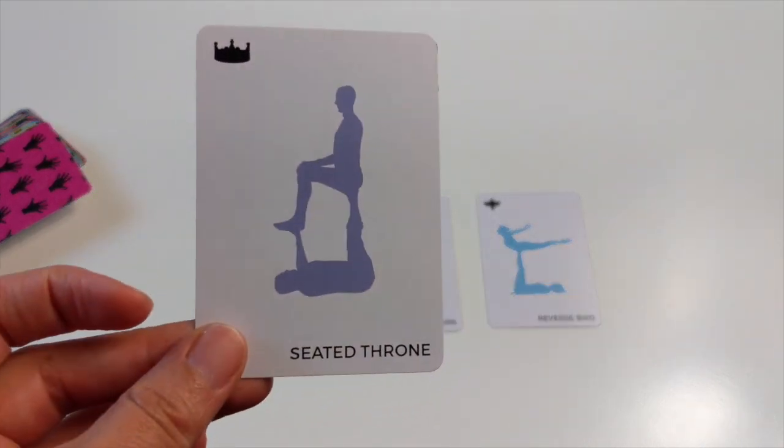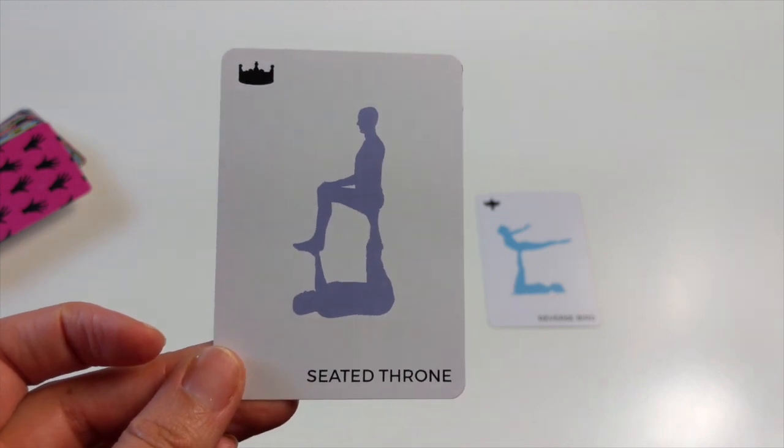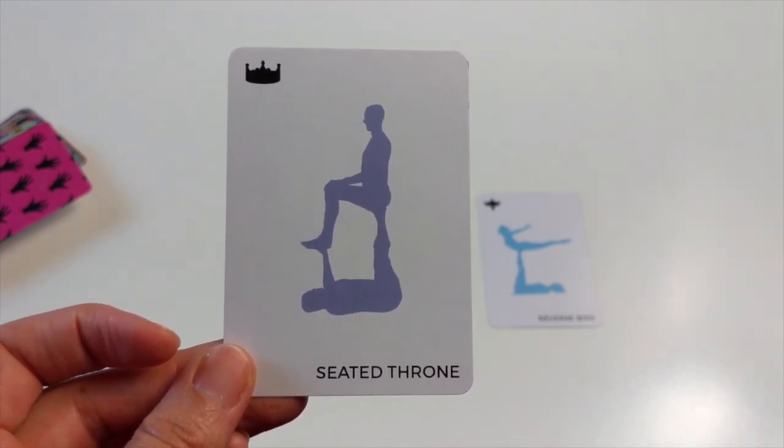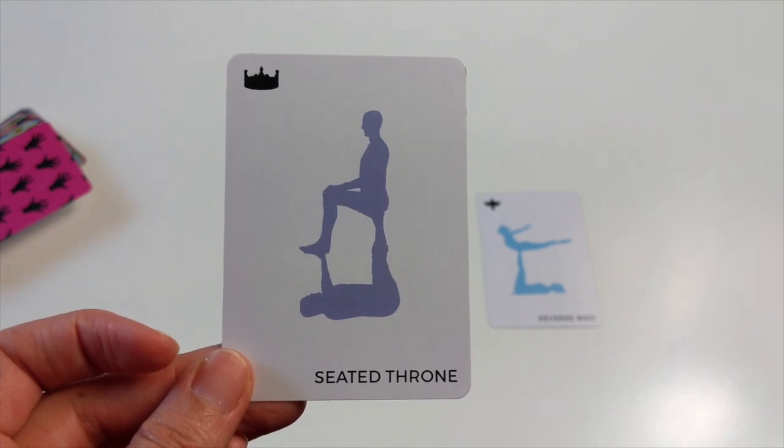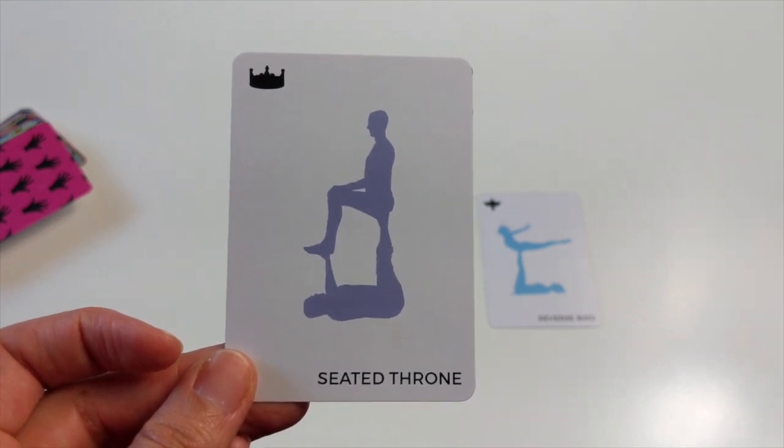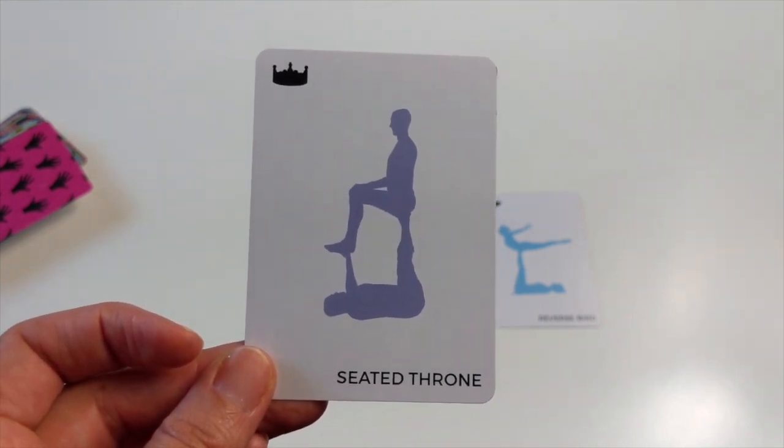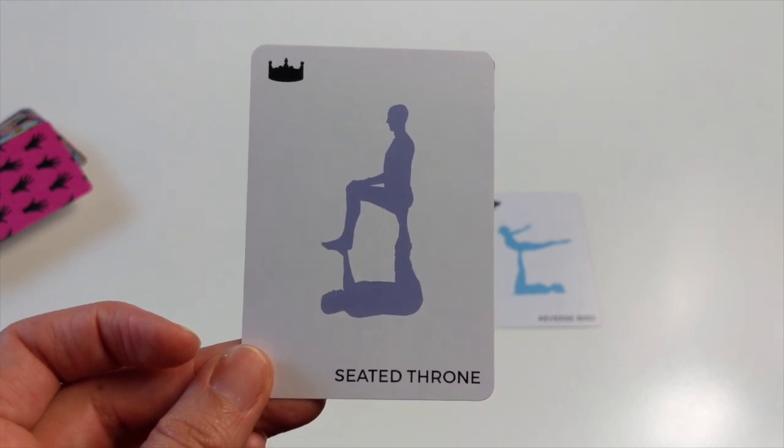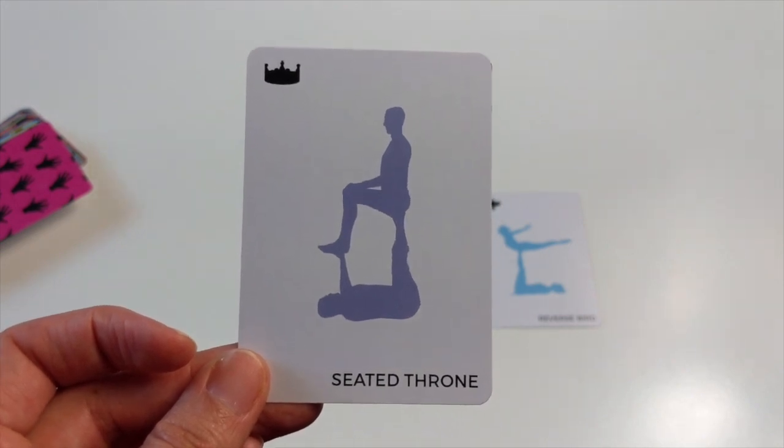Seated throne says to me that everyone is stable but alert with their gaze to the future. In seated throne you're really thinking about stacking the bones from base to flyer, everything's connected right down through to the floor.